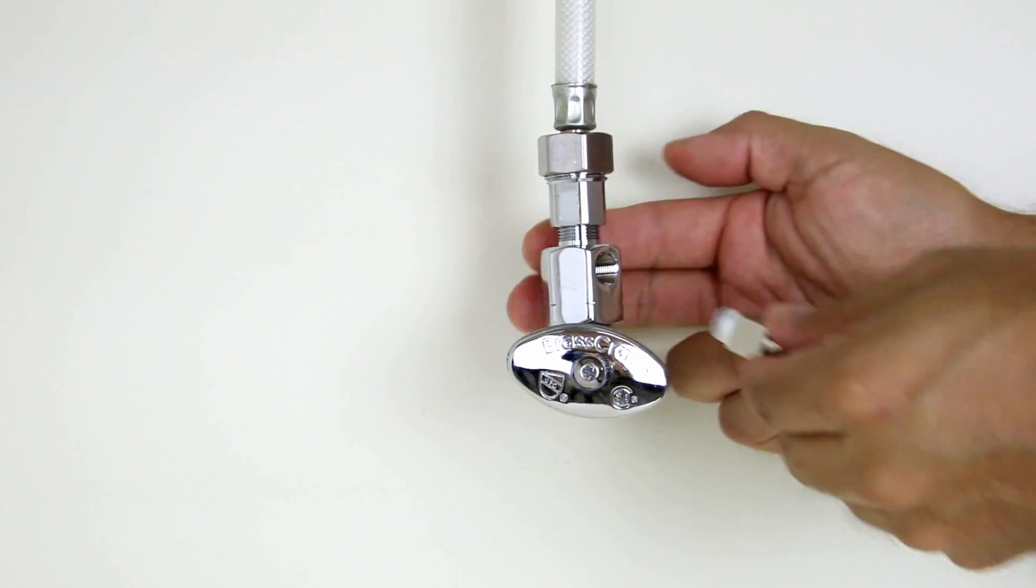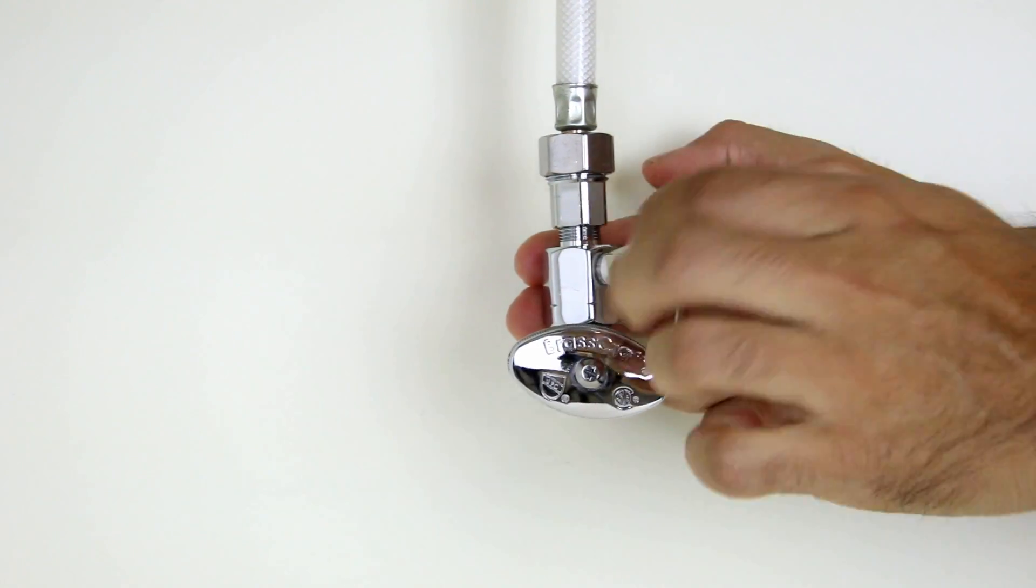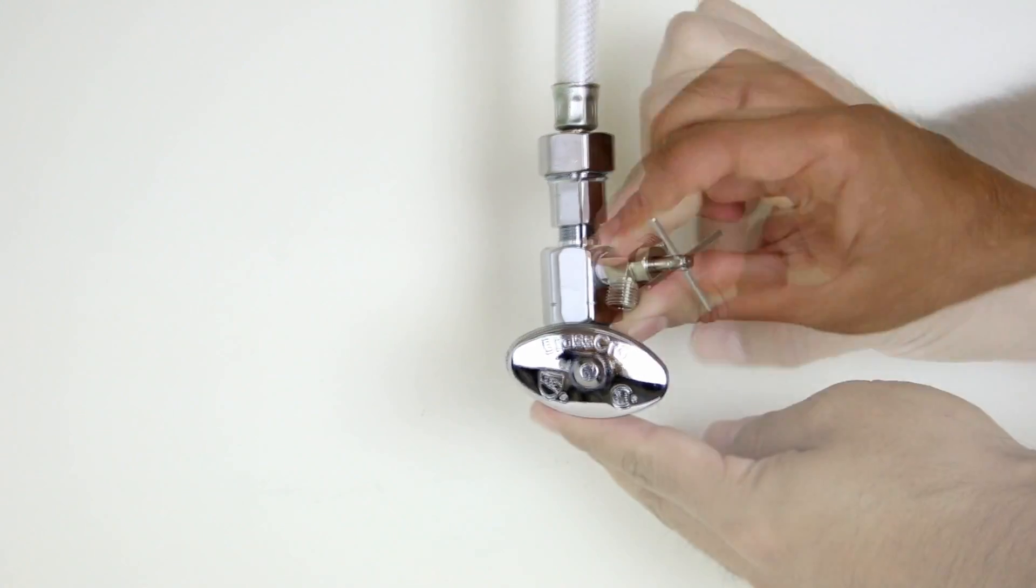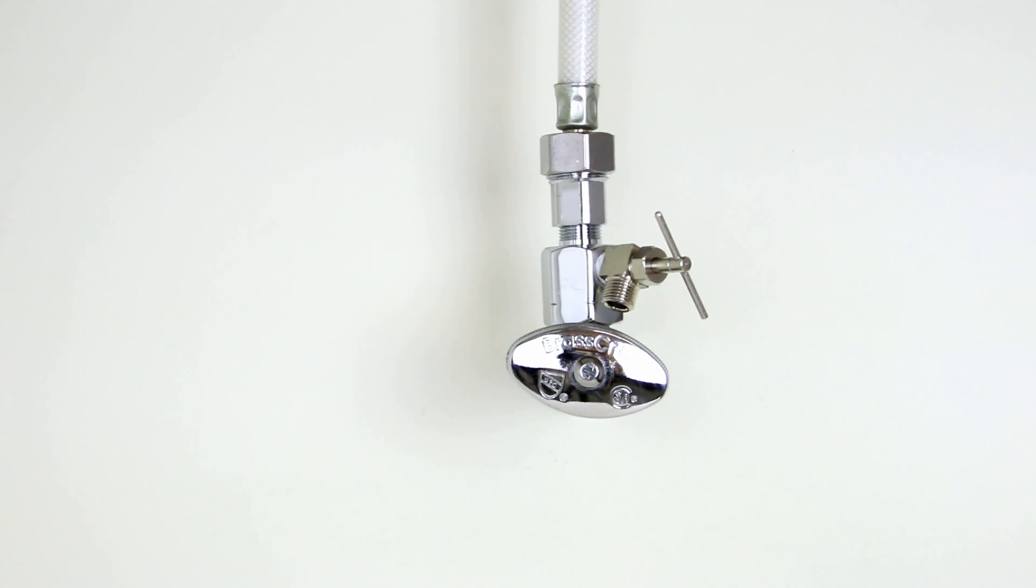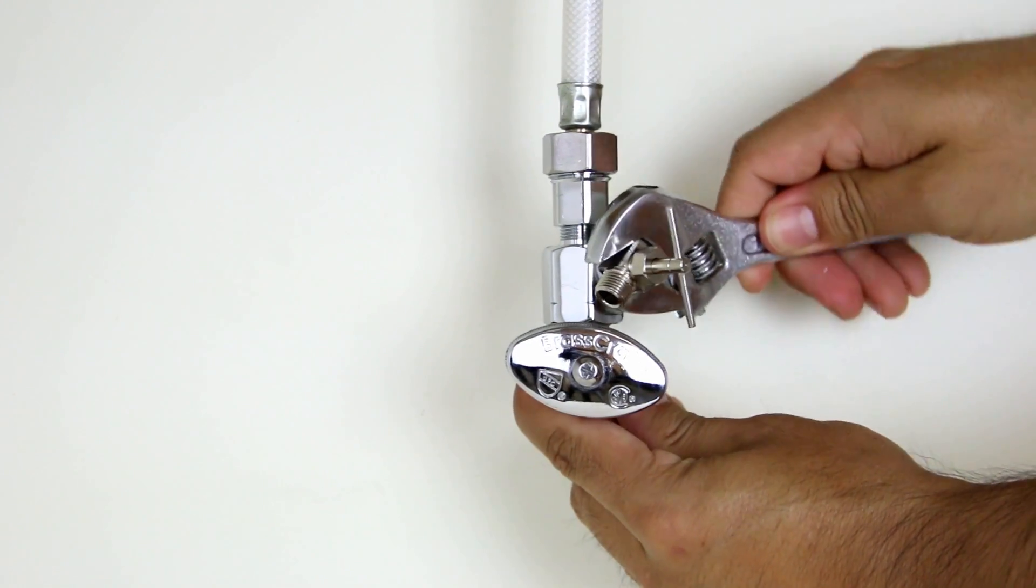At this time attach the needle valve to the feed water adapter by hand tightening it clockwise. Use an adjustable wrench to completely secure the connection.